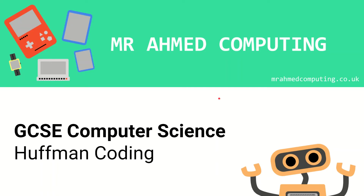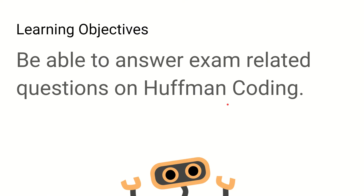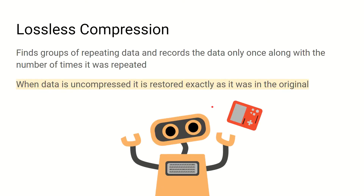In this video we're going to be covering Huffman coding. Our main objective is to be able to understand how we can answer exam related questions on this topic. Huffman coding is a form of lossless compression. When you compress data using a lossless compression method no data is lost, which means that when the file is uncompressed it is restored exactly as it was. This makes it ideal for compressing text files.